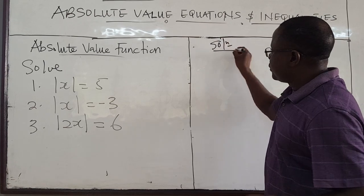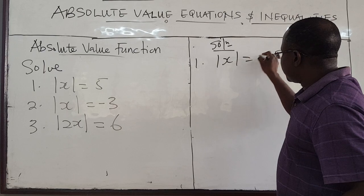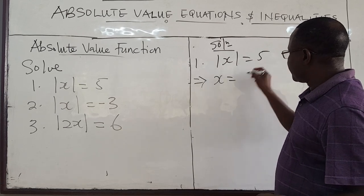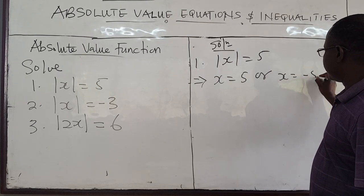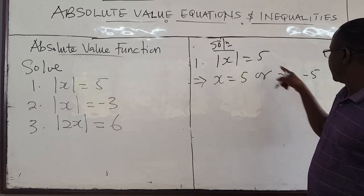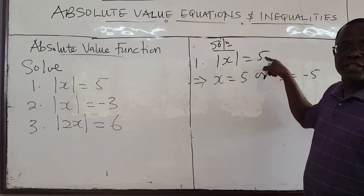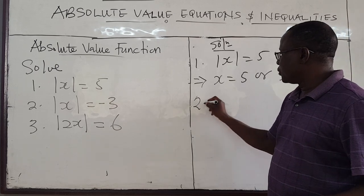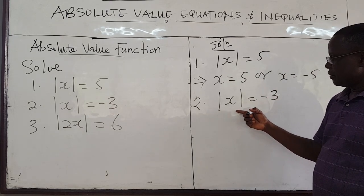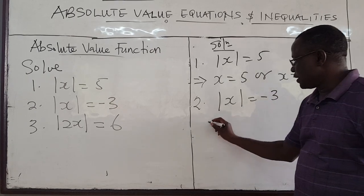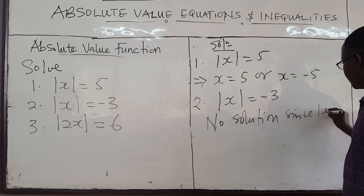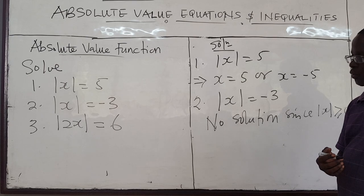Solution 1: |x| = 5. By definition, this implies x = 5 or x = negative 5. The absolute value of 5 is 5, and the absolute value of negative 5 is also 5, so this is correct. Solution 2: |x| = negative 3. We said the absolute value must always be a positive quantity — it can't be negative. Therefore, this equation has no solution, since the absolute value of x is always greater than or equal to 0.